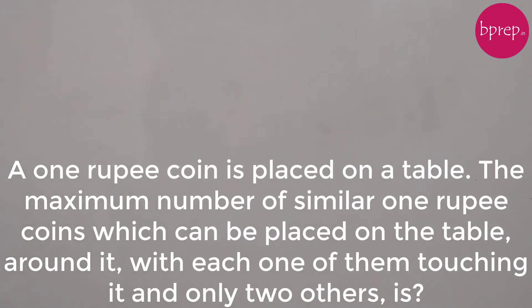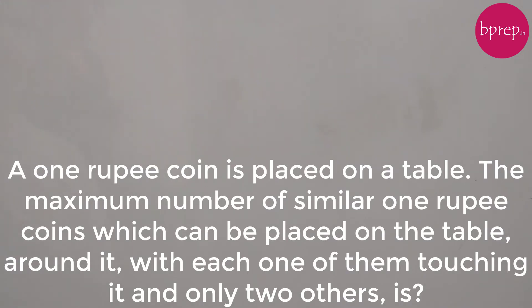A 1 rupee coin is placed on a table. The maximum number of similar 1 rupee coins which can be placed on the table around it, with each of them touching it and only 2 others.